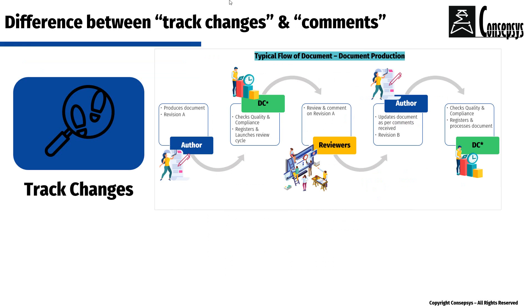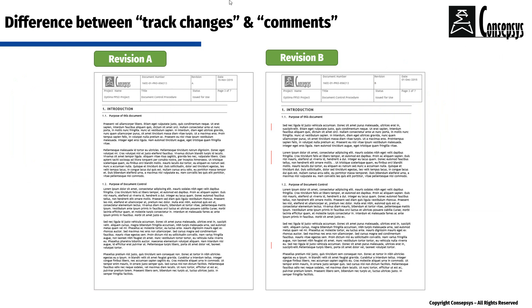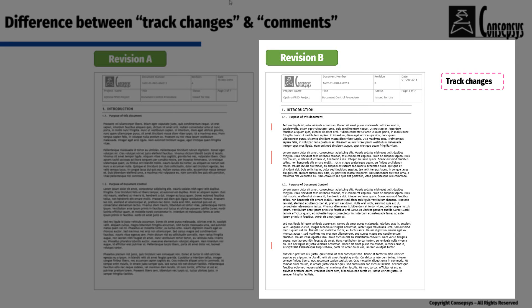Now let's look at track changes. Track changes happen during the modification process. Once the author receives comments made by peers and colleagues, the author modifies the document to include these comments in the new revision. Track changes allow you to show what has changed in the document between revision A and revision B. Here we can see two different revisions side by side, and in revision B we can see what has changed since revision A thanks to track changes — including a vertical line in the margin highlighting the parts that have changed since the last revision.